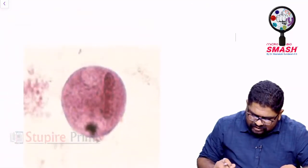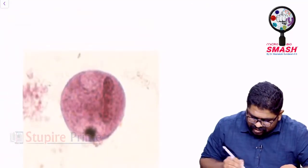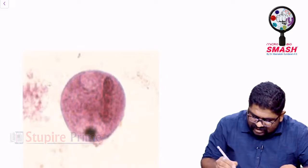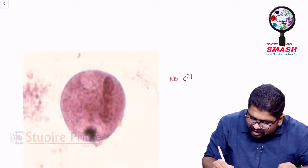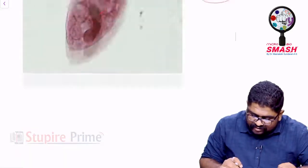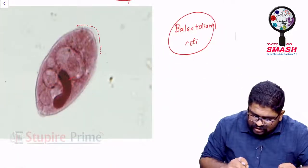Look at this here. The nucleus is big here. The difference is here you do not have any kind of cilia. No cilia when it becomes a cyst, but there is proper cilia when it becomes a trophozoite.